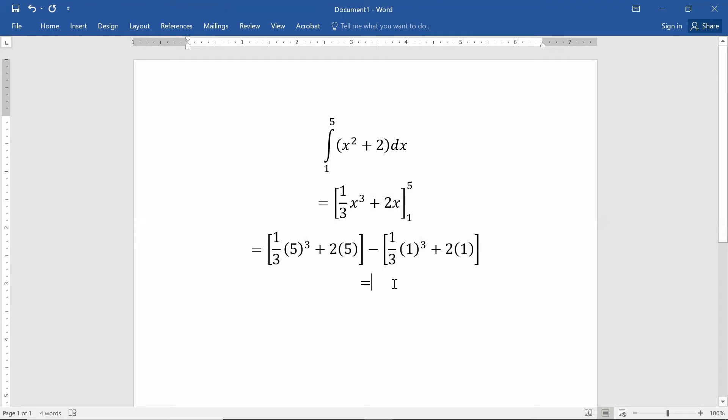So, one third times five to the third plus two times five gives me 51 and two thirds. So, 51 and two thirds in that first bracket. In the second bracket, I have one third times one to the third power plus two. That's two and one third when I type that in. When you subtract, you get a total area under this curve, or a total signed area, I should say, of 49 and one third.